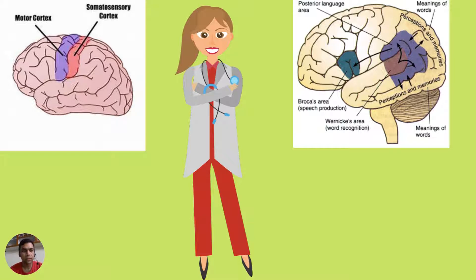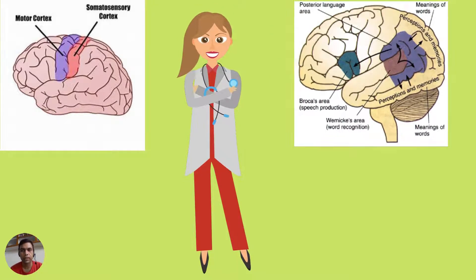These are the areas of the brain. The first image is the motor area, which is responsible for your movement. The second image is the speech area. The two different areas for speech are called Wernicke's area and Broca's area, and they are responsible for your talking.